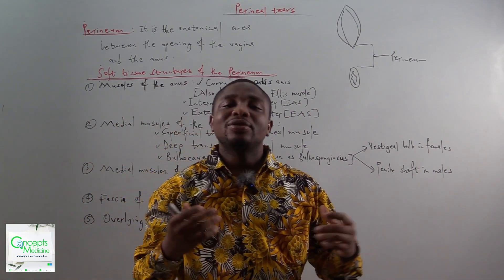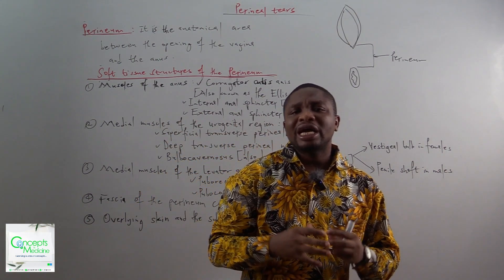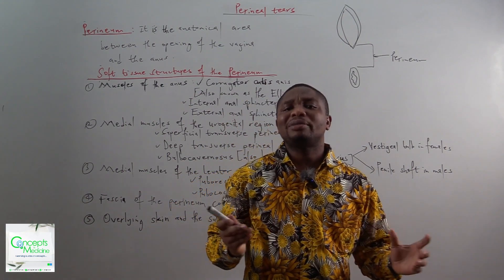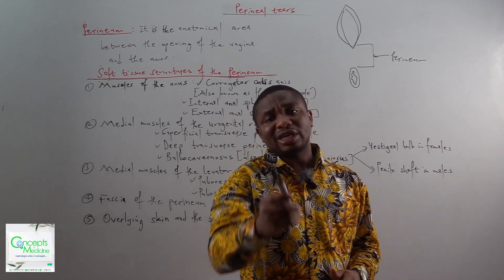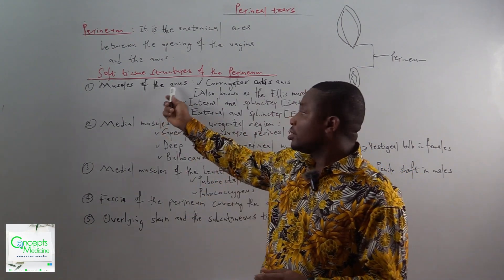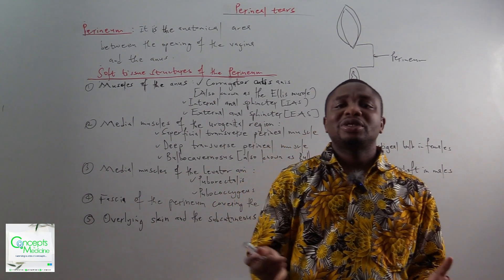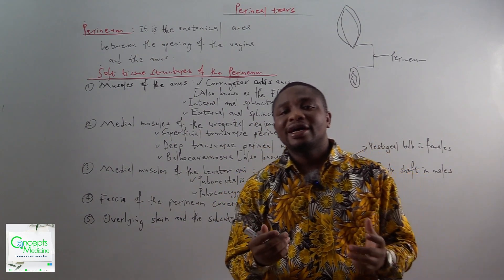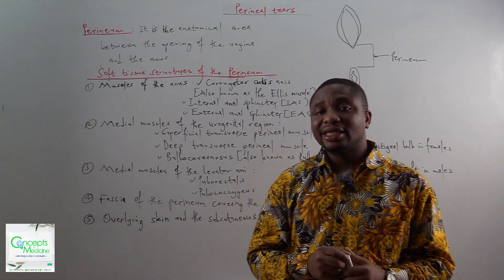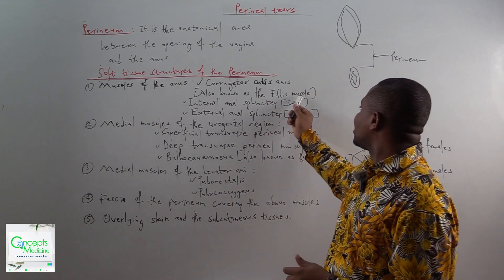Now let's move on and look at the soft tissue structures of the perineum. There are about five groups of soft tissue structures. We are going to take them one by one. The first one is the muscles of the anus. For the muscles of the anus, the first one we want to talk about is the corrugator cutis ani, meaning that it has to do with the skin. Another name for that muscle is what we call the Ellis muscle.